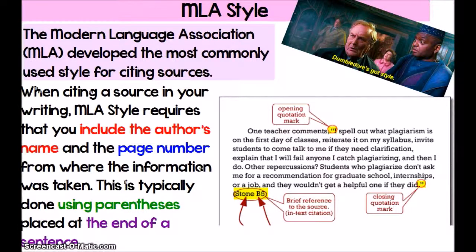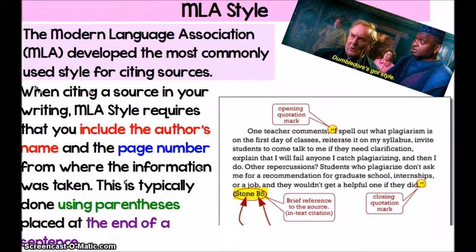The most common citation that most English students use is MLA style. MLA stands for the Modern Language Association, and it is one of the most commonly used styles worldwide for citing resources. When you work in the sciences, you tend to use APA style — the American Psychological Association. There are some slight differences between MLA and APA style, although there are a lot of similarities, especially at the basic level we're going to be using in sixth grade. MLA style requires that you include the author's name and the page number from where the information was taken, and typically this is done using parentheses placed at the end of the sentence. This is our parenthetical citation.